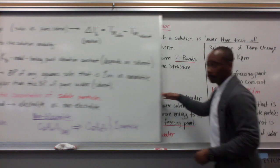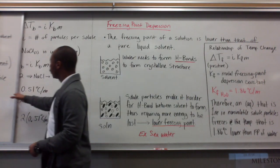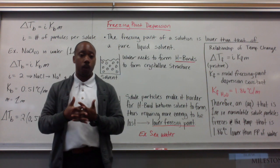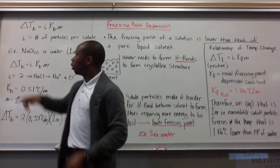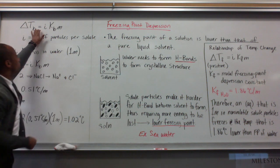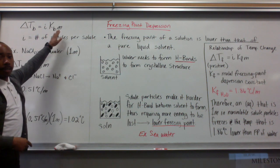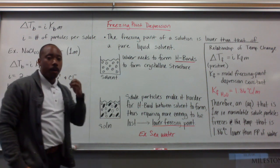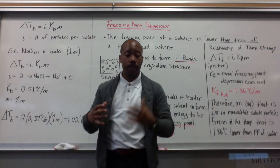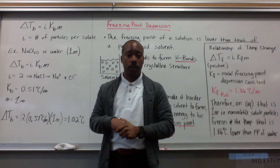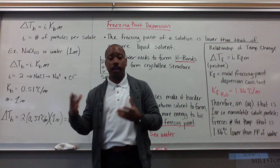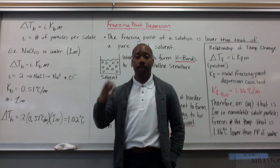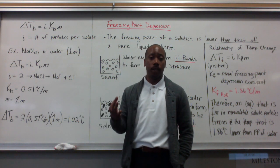So, we can account for these particles by adding one thing to our boiling point elevation equation. So, if delta T sub B equals i times K sub B times the molality. i is the number of particles per solute that's dissolved in solution. So, for our last example, we had CaCl2. We had three particles, so i would equal three because CaCl2 dissolves into three ions.